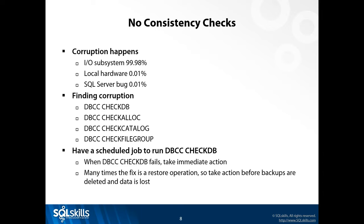Next: consistency checks. Most clients I work with have some form of backups, but what I often find is consistency checks not being run at all, because non-DBAs simply don't know about it. Corruption happens — I/O subsystem errors cause about 99.98% of corruption events, 0.01% could be local hardware, and 0.01% could be a SQL Server bug. Recent versions of SQL Server have very few bugs that cause corruption. To find corruption, you need to run DBCC CheckDB. You can also run CheckAlloc for allocation tables, check catalog, or check individual filegroups.